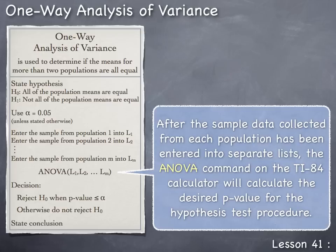After the sample data collected from each population has been entered into separate lists, the ANOVA command on the TI-84 calculator will calculate the desired p-value for the hypothesis test procedure. In statistics, the term ANOVA is the commonly used abbreviation for analysis of variance.